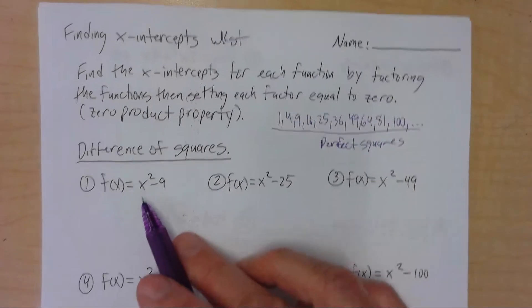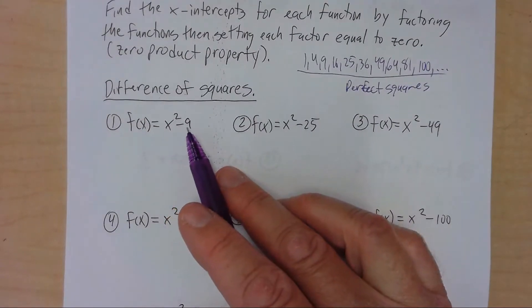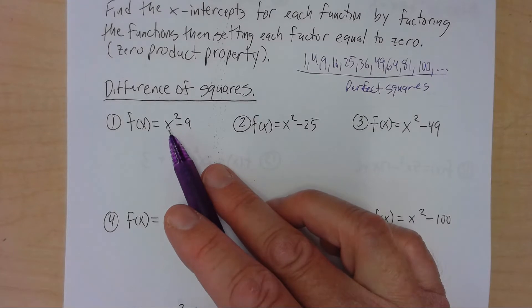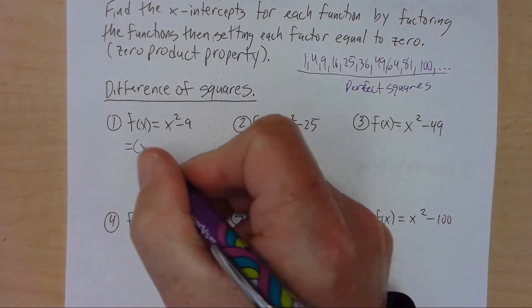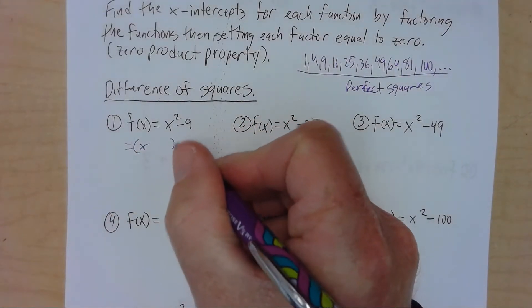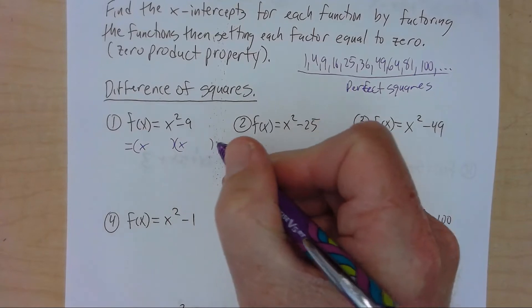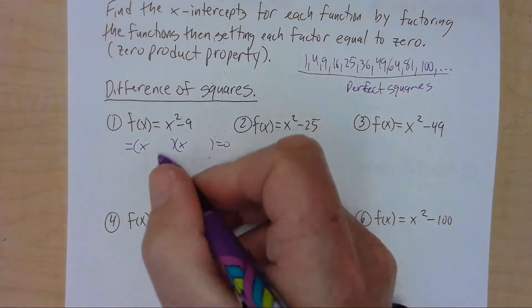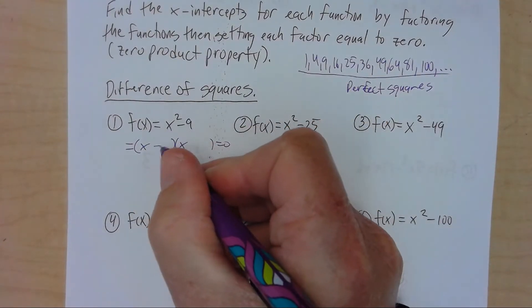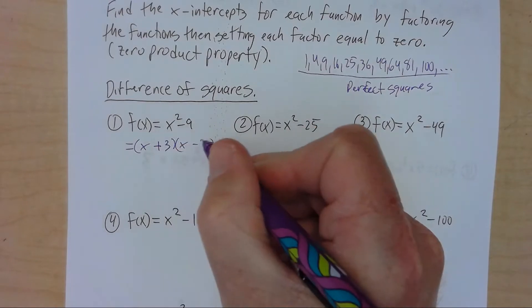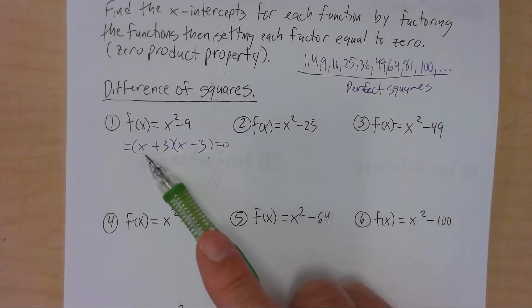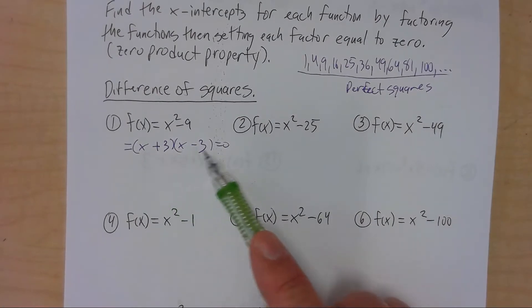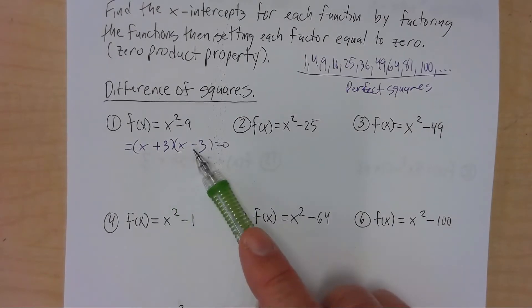So by difference, we mean subtraction. So x squared is a perfect square because it's x times x. And 9, of course, is a perfect square because it's 3 times 3. So we factor this by doing x and x. And then we're trying to set it equal to 0. And then plus 3 and minus 3.